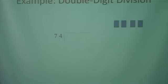Now we're going to try one more: 8,907 divided by 74. Can 74 go into 8? No. Can 74 go into 89? Yes, it can.